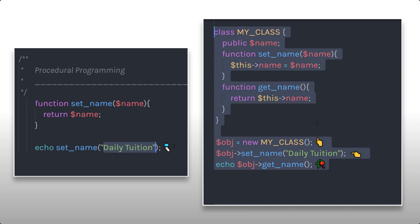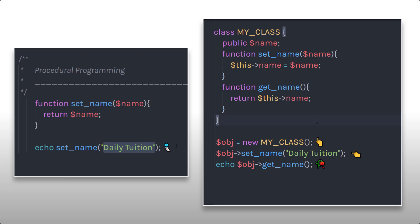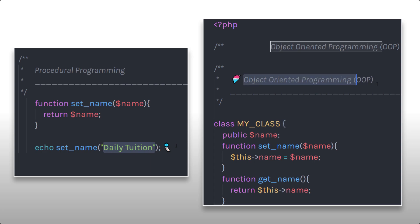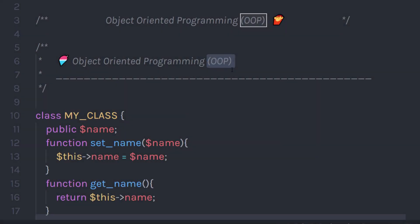You need to decide which technique you want to use to create your application. This program will display the same string as before but using an object oriented way. Object oriented programming makes it possible to create fully reusable applications with less code and shorter development time. OOP helps you keep the application code DRY — it means don't repeat yourself — and makes the code easier to maintain, modify, and debug. All professional developers use object oriented programming to create their applications.